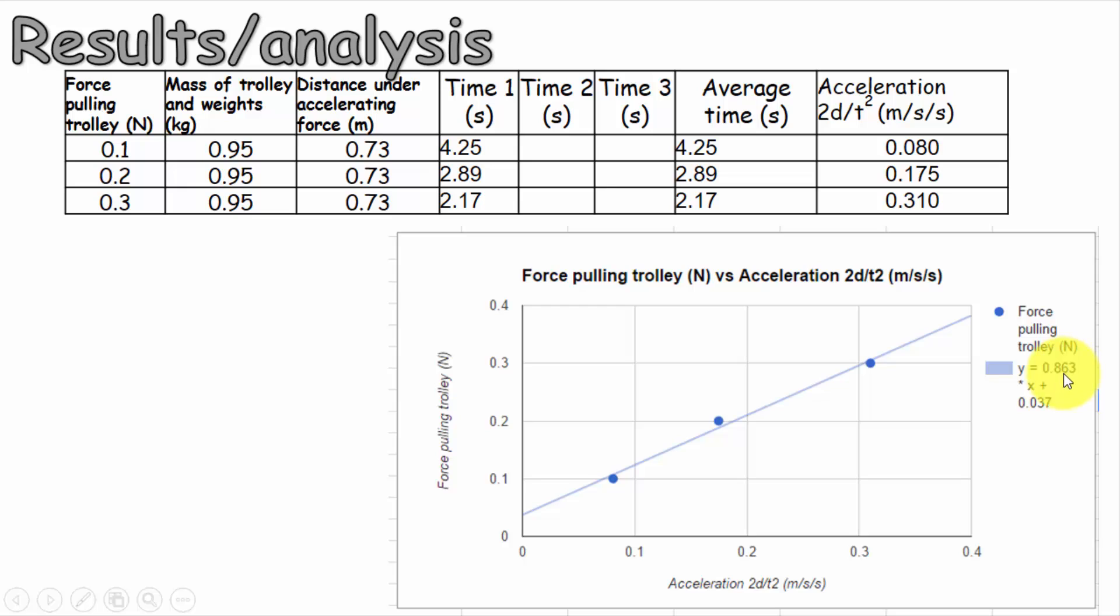Obviously there were some errors in the experiment that could have been improved upon. It's not come out directly proportional. There is a y-intercept, and that's probably because of frictional forces. But otherwise, a satisfactory result and definitely some things we could improve on. Maybe reducing the friction, maybe doing a larger range of results, taking averages, and seeing if we can get this number as close to this number as possible.